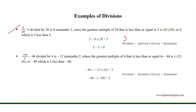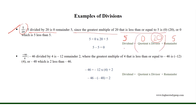5 is divided by 20 in this example. So, 5 divided by 20 is 0 remainder 5. Since the greatest multiple of 20 that is less than or equal to 5 is 0, which is 5 less than 5, as 5 minus 5 equals 0.